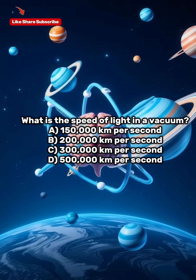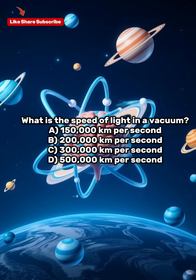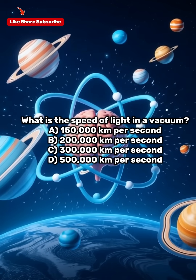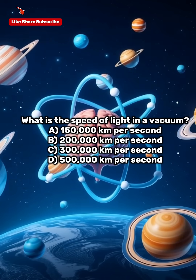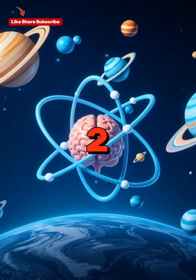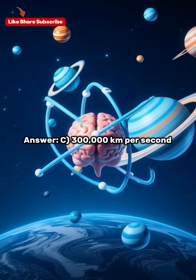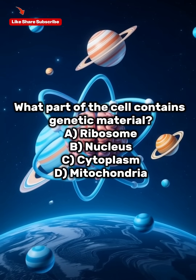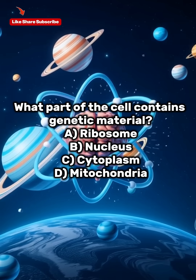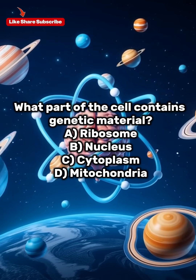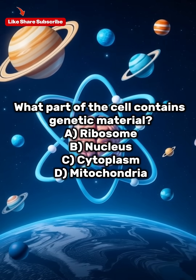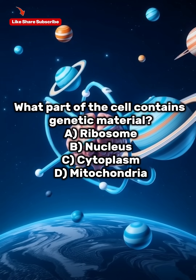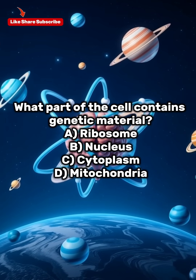What is the speed of light in a vacuum? A) 150,000 kilometers per second, B) 200,000 kilometers per second, C) 300,000 kilometers per second, D) 500,000 kilometers per second. Answer: C, 300,000 kilometers per second.